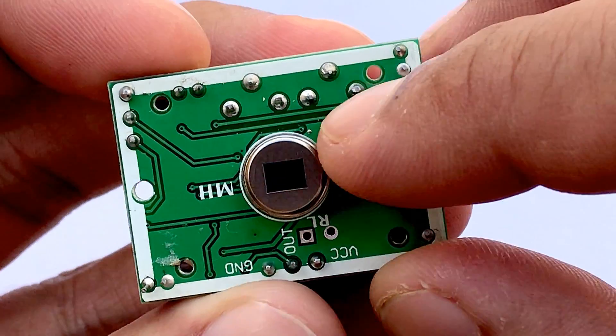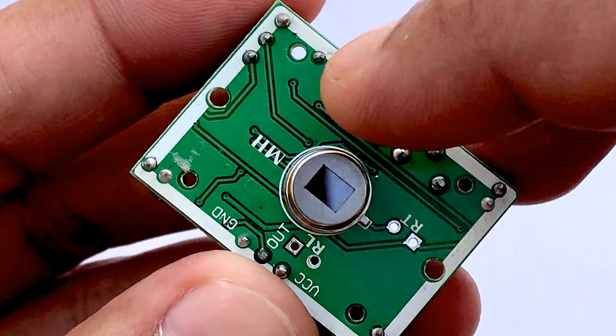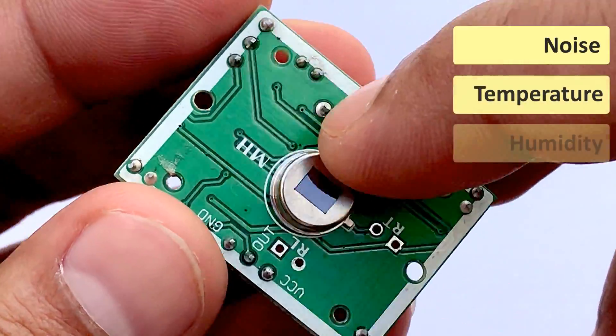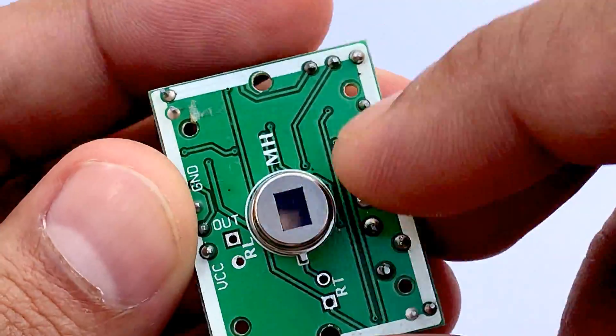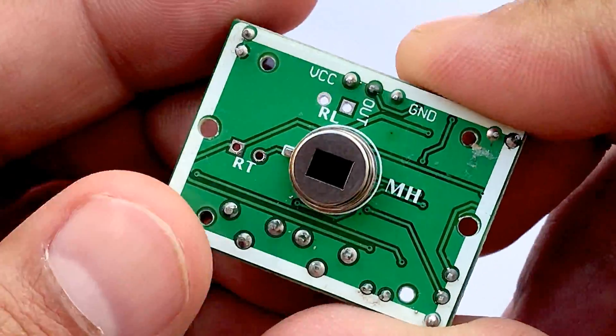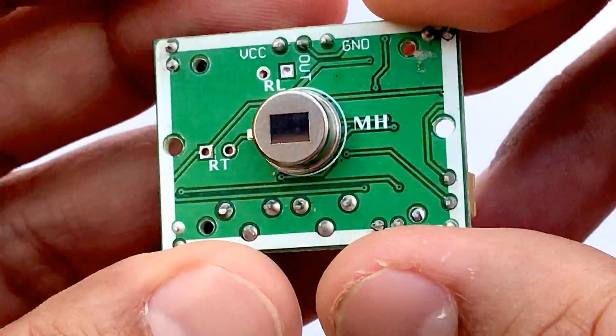The actual sensor is inside a sealed metal can. The can basically protects the sensor from noise, temperature, and humidity. There is a thin window made of IR transmissive material to allow the IR signals to reach the sensor.